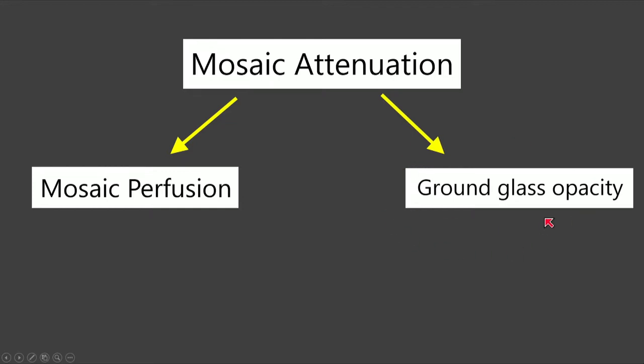Ground glass opacity represents abnormally dense areas of the lung, and mosaic perfusion represents abnormally lucent areas of the lung. Oftentimes people use the terms mosaic perfusion and mosaic attenuation interchangeably — this is not correct. Mosaic attenuation can be either mosaic perfusion or ground glass opacity, and we have to try to differentiate between them.